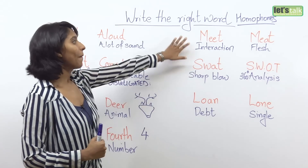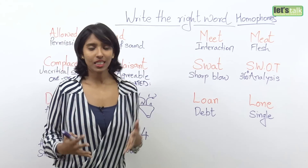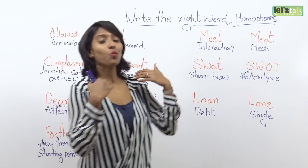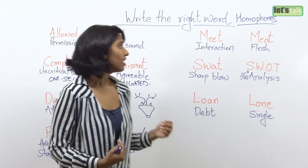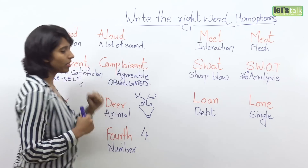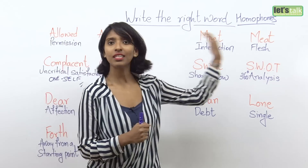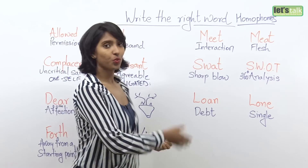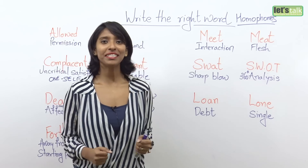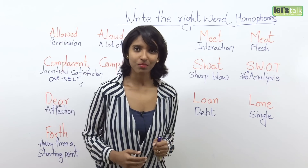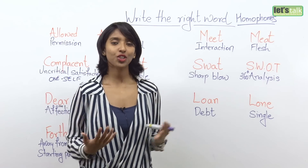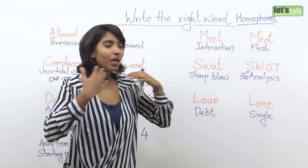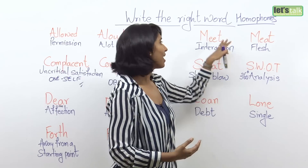The next one is meet versus meat. 'Meet,' according to the Oxford Dictionary, means to come into someone's presence. That means when you go somewhere and you see another person — that's a meeting. You may want to greet the person and say hello, my name is Imelda, how do you do? That's a formal conversation — you meet a person, you come into someone's presence.